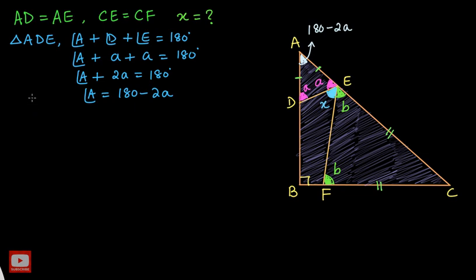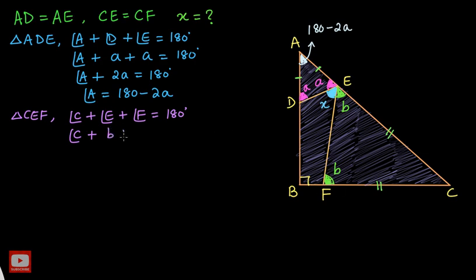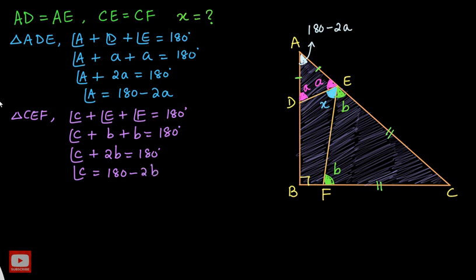Now I will take triangle CEF and apply the angle sum property. Angle C plus angle E plus angle F equals 180 degrees. Angle E is B and angle F is also B. So we have angle C plus 2B equals 180 degrees, which gives us angle C equals 180 minus 2B.